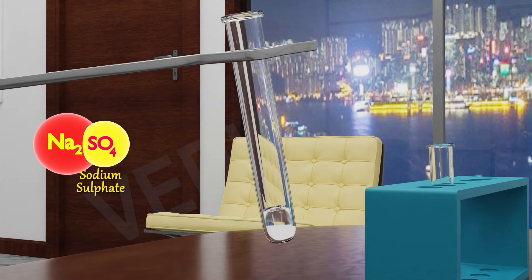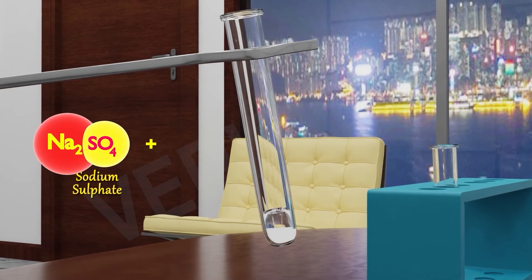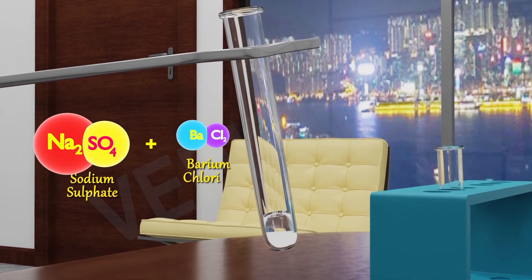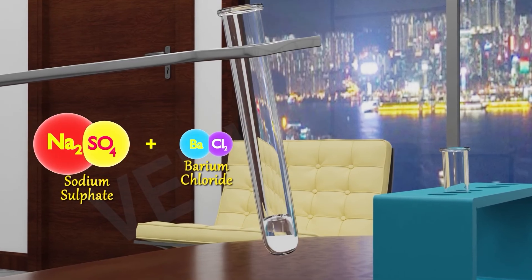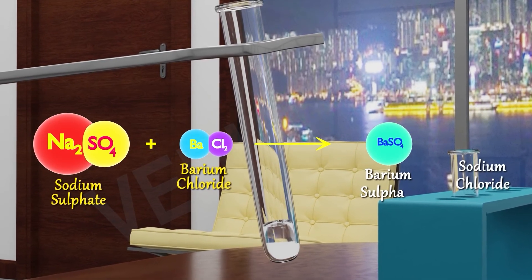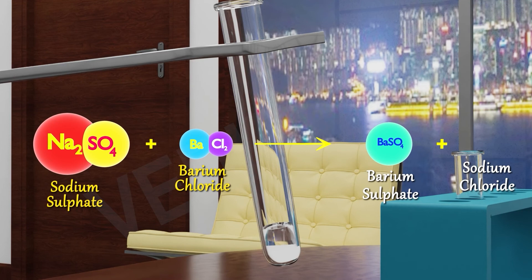Na2SO4 aqueous solution if we mix it with barium chloride solution, it will become a white precipitation of BaSO4 and NaCl will be in aqueous form.